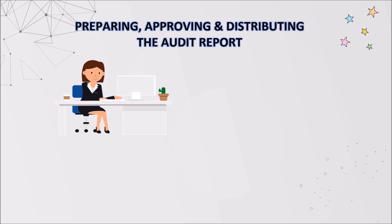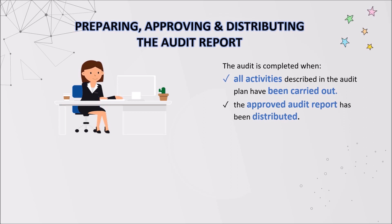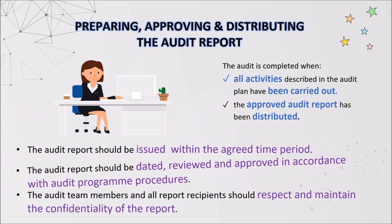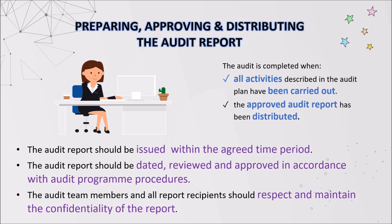Moving on to our audit report stage, we will see all the results of our audit in that report. The audit is complete when all activities described in the audit plan have been carried out and when the approved audit report has been distributed. The audit report should be issued within the agreed time period, and should be dated, reviewed, and approved in accordance with the audit program procedures. Finally, the audit team members and all report recipients should respect and maintain the confidentiality of the report.